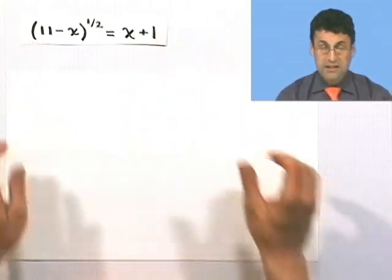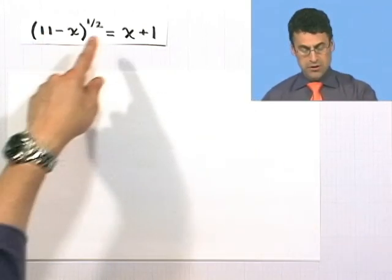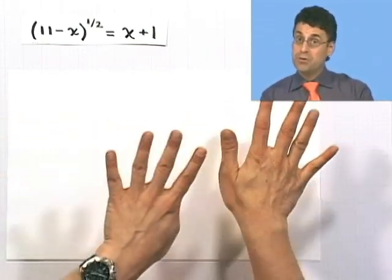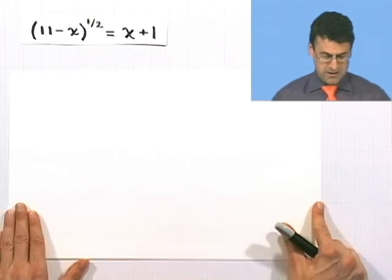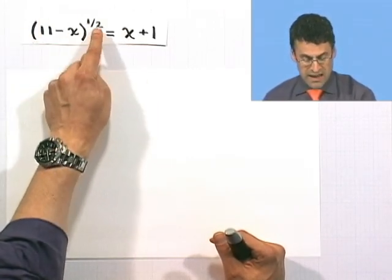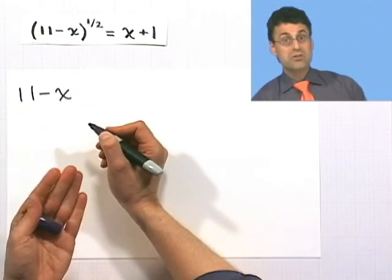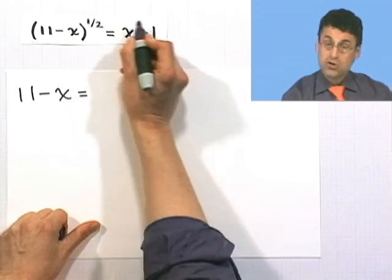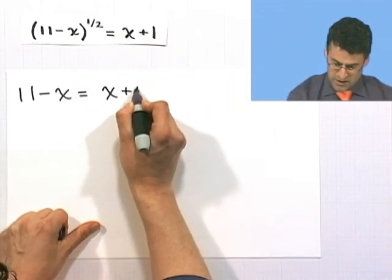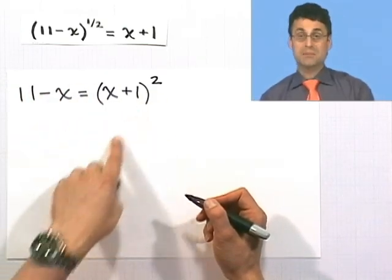Now I want to try another question which also has rational exponents — in fact, just one. It's the quantity 11 minus x to the 1/2 power equals x plus 1. Same method: I don't like that 1/2 exponent, so I'm going to square both sides. On the left-hand side, squaring lifts that 1/2 — think of it as 1/2 times 2 giving a power of 1 — so I get 11 minus x. The right side, however, I have to actually square, which means this won't be a linear equation; it'll be some kind of quadratic.